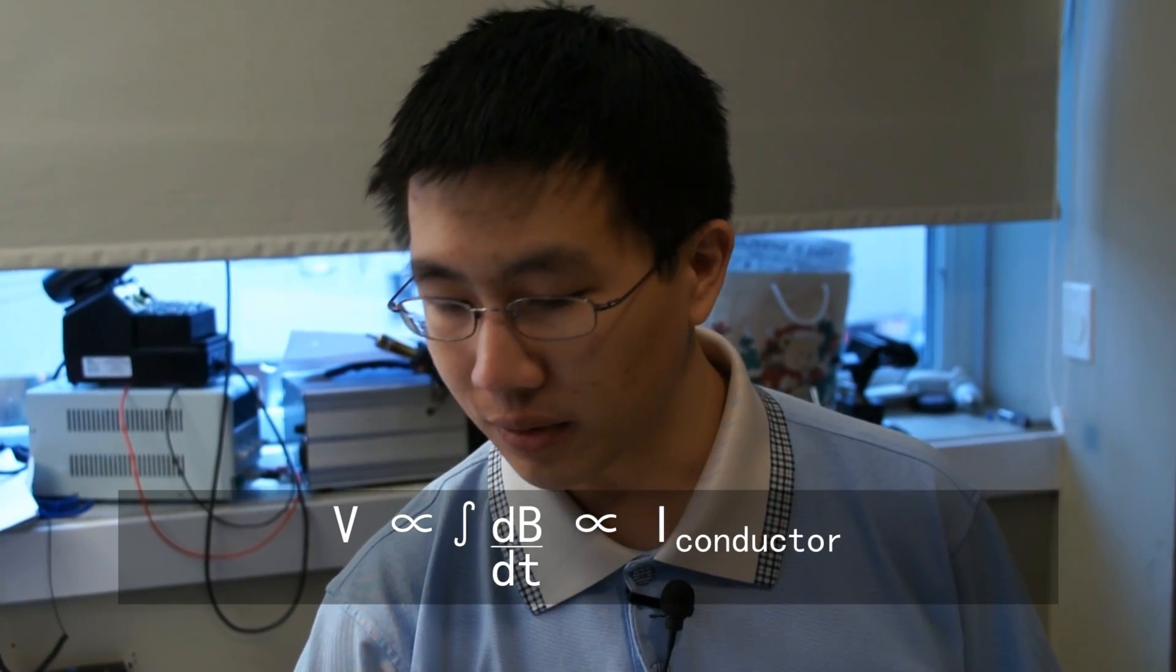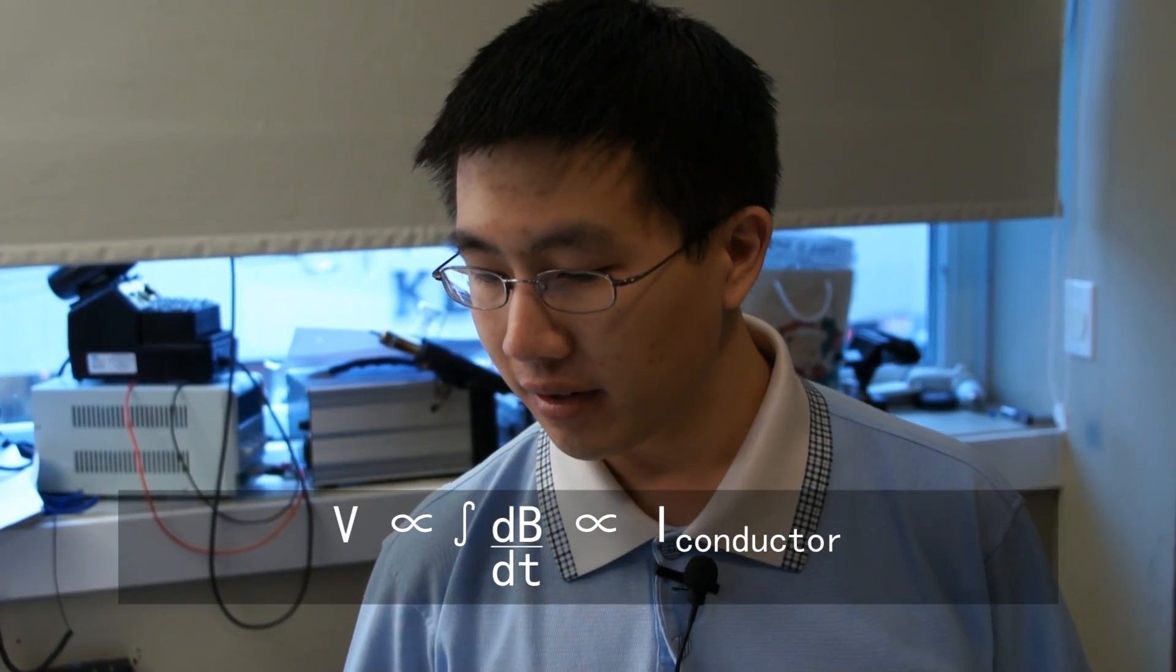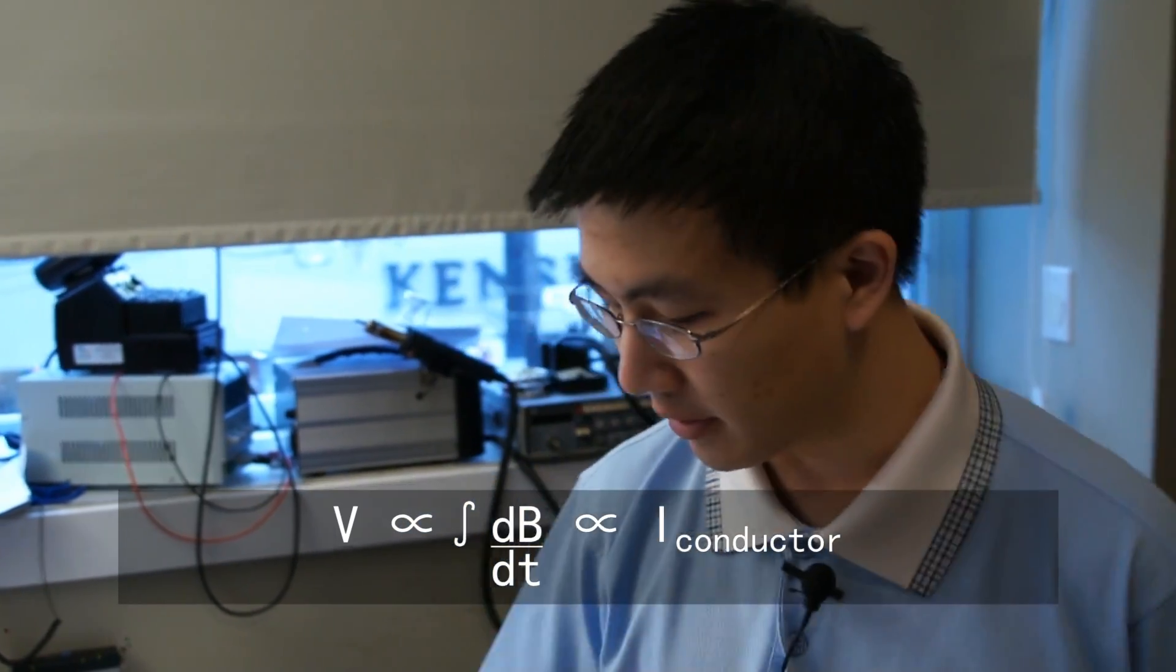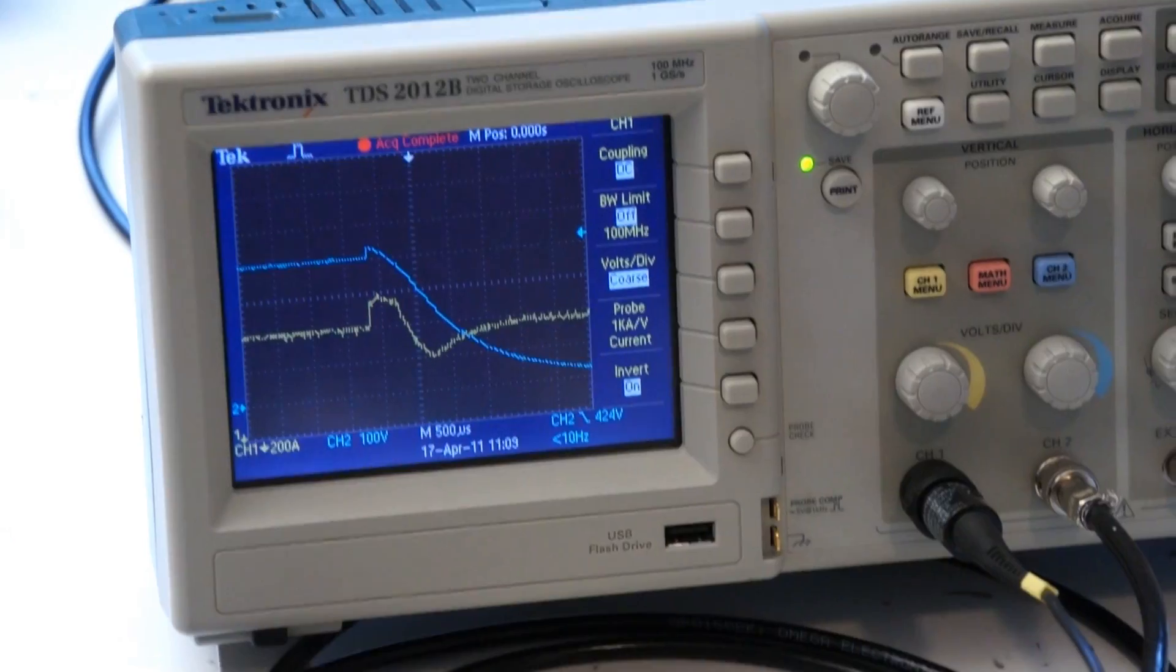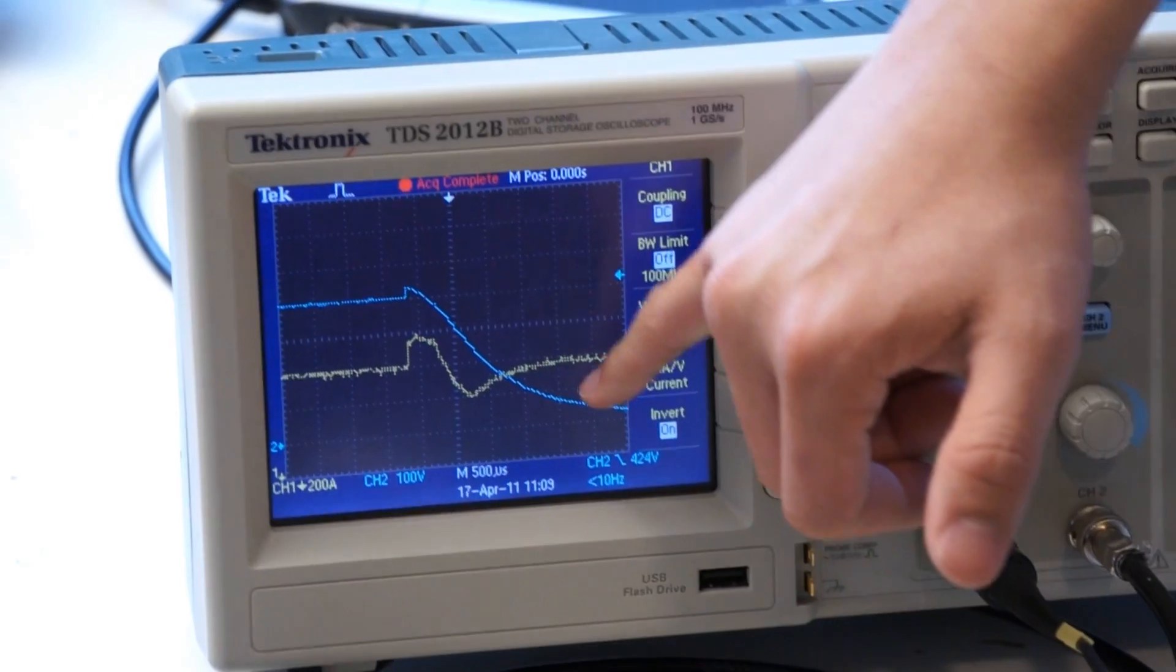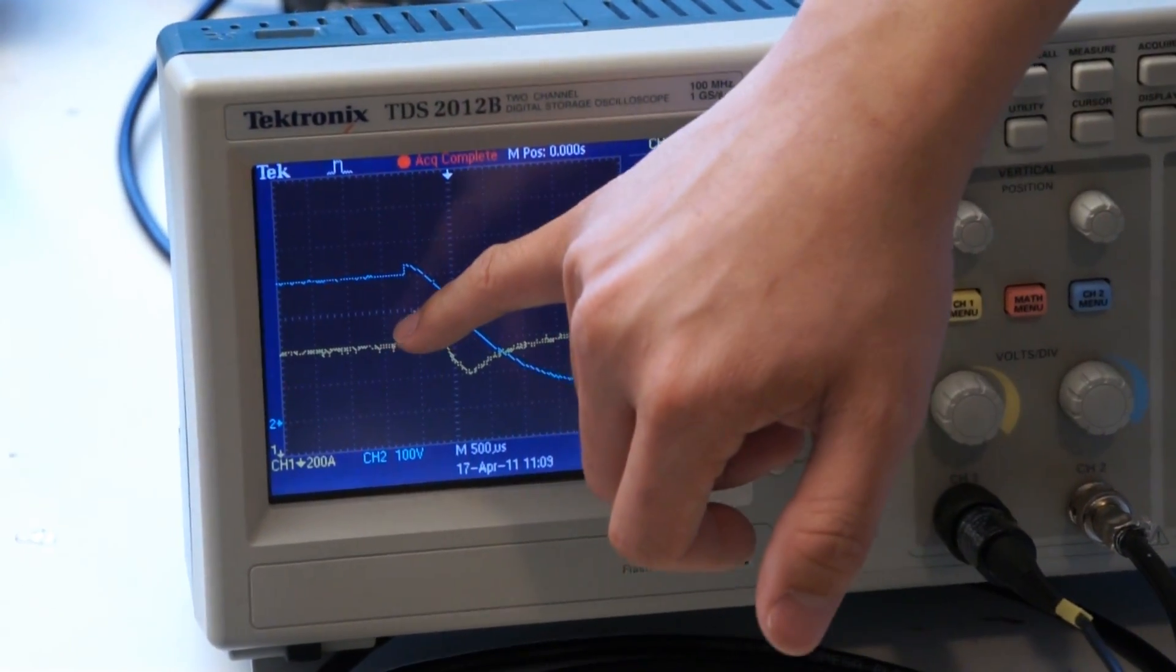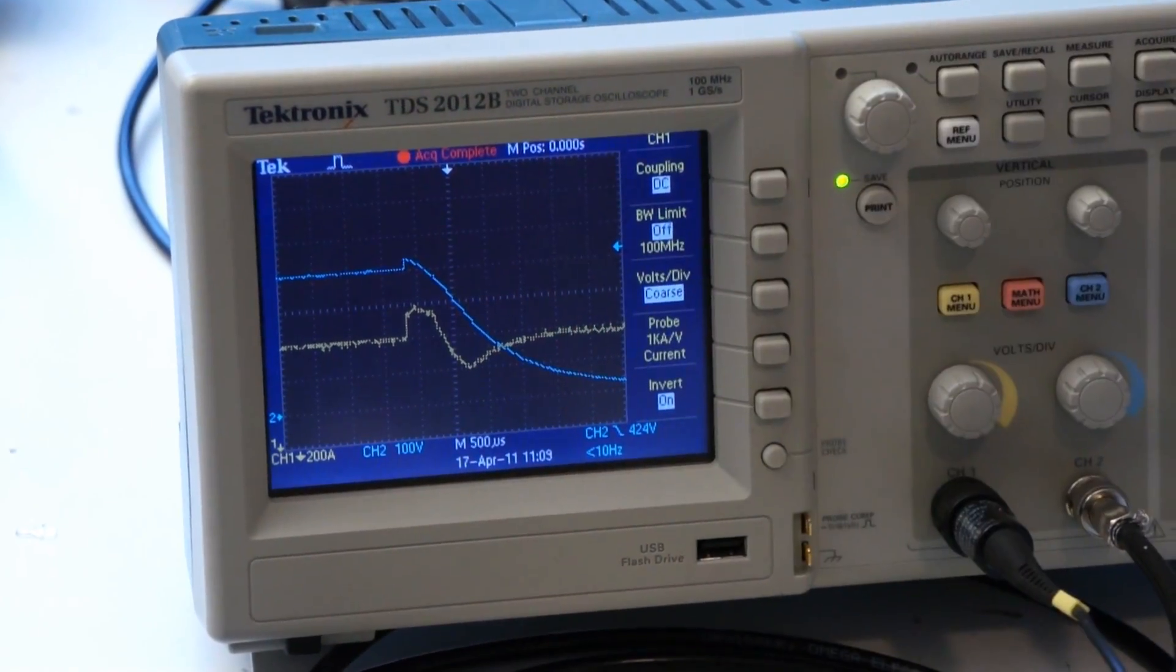Inside this enclosure is the integrator. We have a couple extra buffers, and that leads to our oscilloscope. The blue trace here is the voltage contained inside the capacitor bank, while the yellow trace is the current flowing through the conductor.